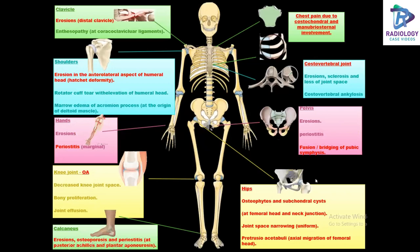Skeletal changes in AS involving the clavicle include distal clavicular erosions. In the shoulders, we see the hatchet deformity, which is erosion in the anterolateral aspect of the humeral head. In the hands, there is periostitis which is marginal, along with findings of erosions. The knee joint shows findings overlapping with osteoarthritis — decreased knee joint space, bony proliferation, and joint effusions. The calcaneum shows erosions, osteoporosis, and periostitis predominantly in the regions of the posterior Achilles tendon and plantar aponeurosis.